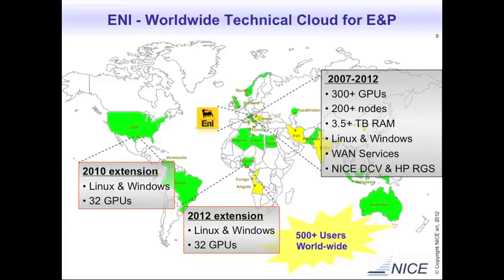In terms of customer deployments, we have customers in oil and gas — E&I is a very good example, having deployed this technical cloud model for five years. It's not a pilot; it's in production for all 500 users worldwide. They eliminated the need for any workstation on the desktop for their European users by centralizing all computing and visualization in Milan. All users have either a laptop or a thin client and connect to get their applications — Geoprobe, Petrel, Abacus — off the intranet. The scenario did so well they began replicating it in different regions.